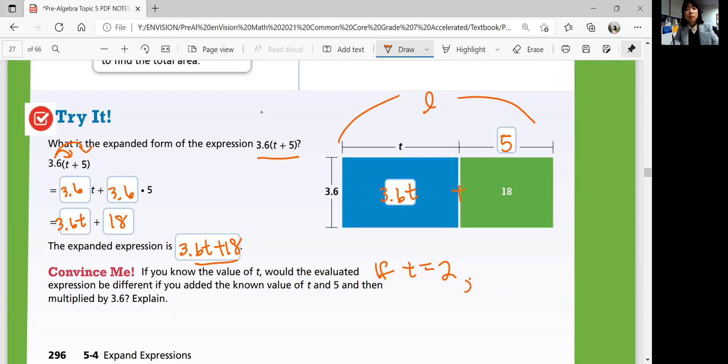then 3.6 times 2 plus 5, because t is 2, from the first one, is 25.2.